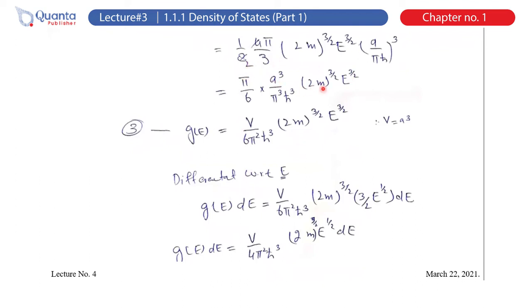This is just a simplification. When you differentiate, the function G(E)·DE becomes proportional to E^(1/2)·DE, because the differential of energy brings down a factor of 3/2·E^(1/2). Here I wrote V where V is just A³, the volume, because in a 3D potential well all three sides are equal, so multiplying them gives the volume.